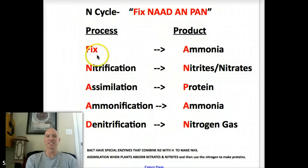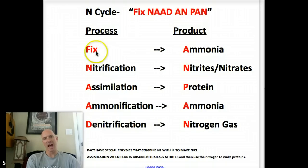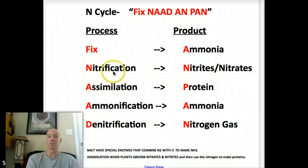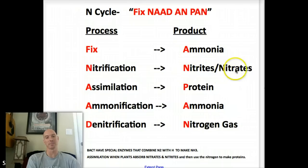So Fix is for fixation. Nitrogen fixation happens — it's a process — and it creates ammonia, which is the product. That ammonia gets converted by bacteria through a process called nitrification into nitrites and nitrates as the product.